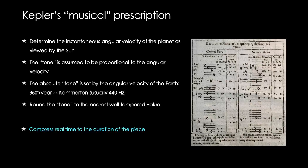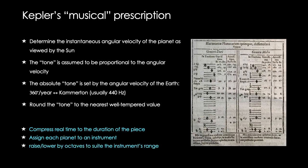If you want to turn this into a real piece of music, of course you have to compress the real time, the planetary time, into the duration of the piece in the concert hall. You have to assign each planet in a chorus to an instrument or voice, and you have to raise or lower that tone by one or more octaves to account for the fact that the total dynamical tonal range of an orchestra is generally very much smaller than the total dynamical range of a planetary system.